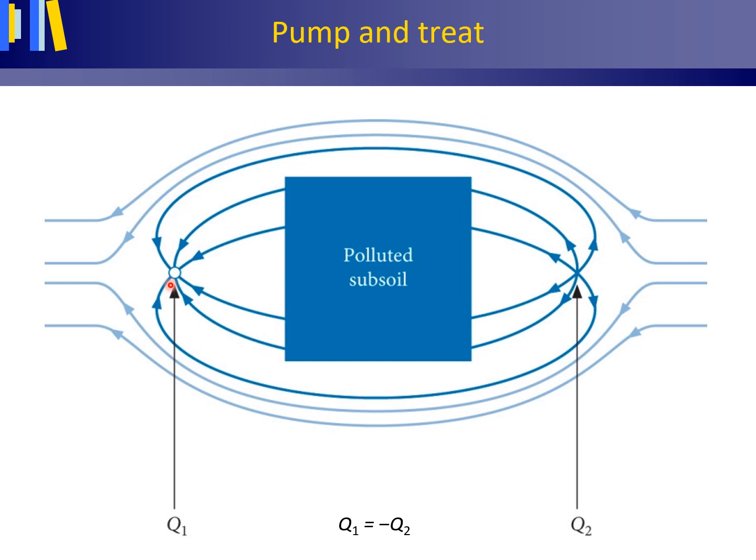If the subsoil to the right of the pumping well is polluted, the polluted water can be drawn to the pumping well and treated, after which cleaned water is injected and recharged upstream.